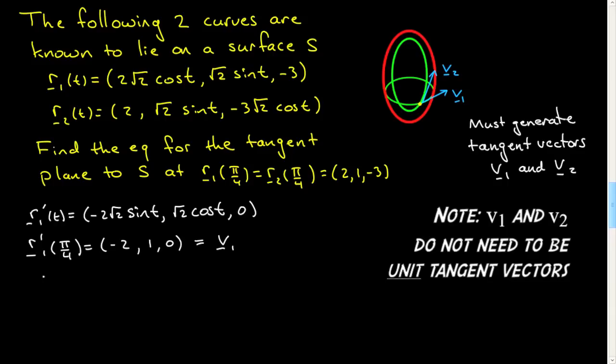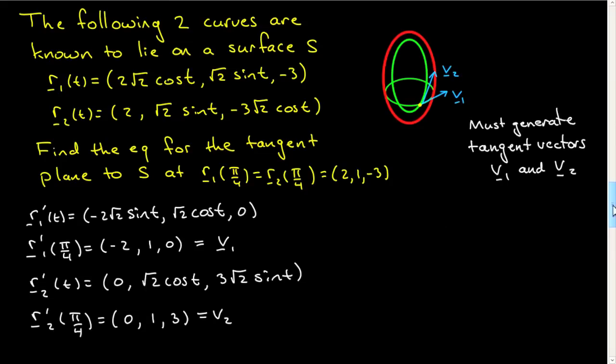We can then do the other one. R2 prime is equal to (0, √2 cos t, 3√2 sin t). Then we're going to evaluate that again at π/4. That will give me (0, 1, 3), and that will be my V2.